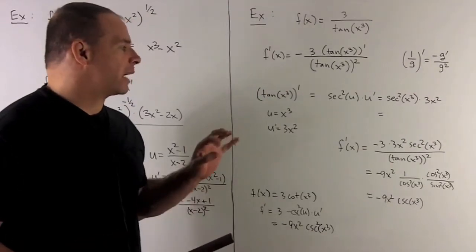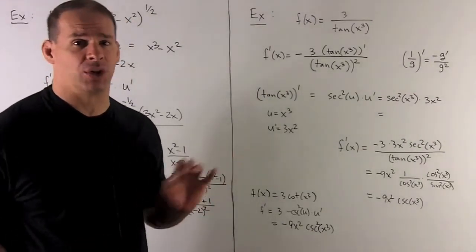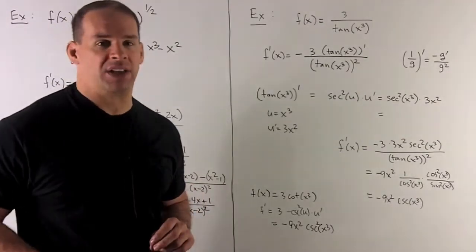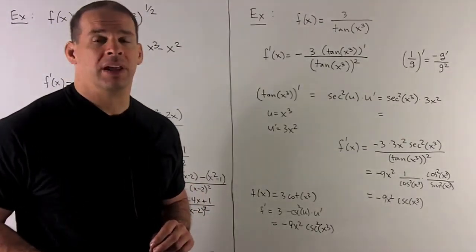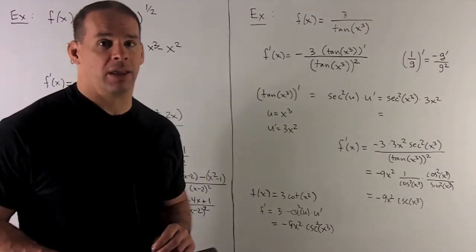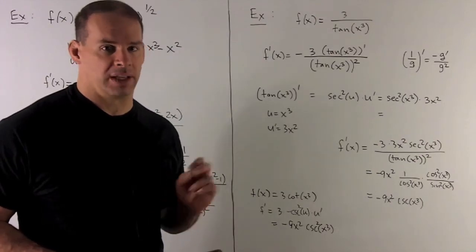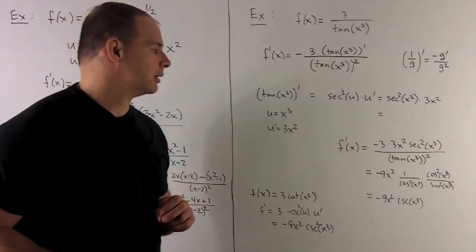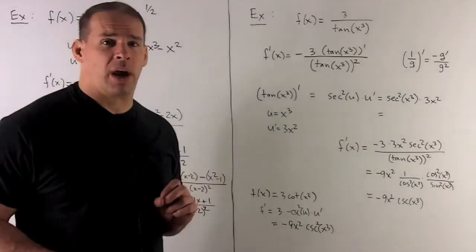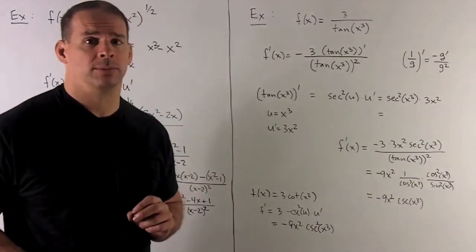If we pull that apart by the definition in terms of sines and cosines, you'll notice we'll be left with 1 over sine squared, which is cosecant squared. And we have x cubed on the inside, so we get minus 9x squared times cosecant squared of x cubed.